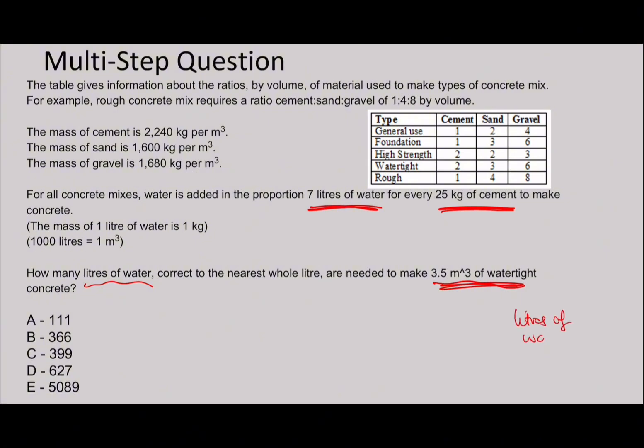The point with this is that sometimes you have to work backwards. So remember, you have to try and work out liters of water. And in order to work out liters of water, you need to know mass of cement because you're told it's 7 liters of water for every 25 kg of cement. How do you work out mass of cement? Well, it tells you the density here. It's 2,240 kilograms per meter cubed. So you're going to have to know the volume of cement. How can you figure out the volume of cement? If you look around a little bit, it says the table gives information about the ratios by volume of material used to make types of concrete mix. So how do you figure out the volume of cement? We're going to use the volume of concrete.